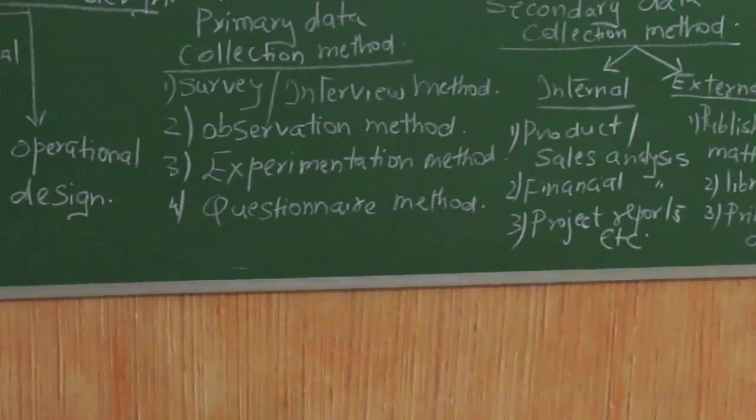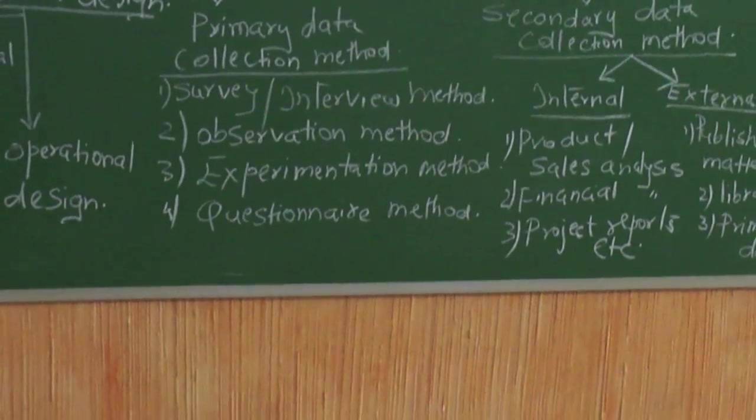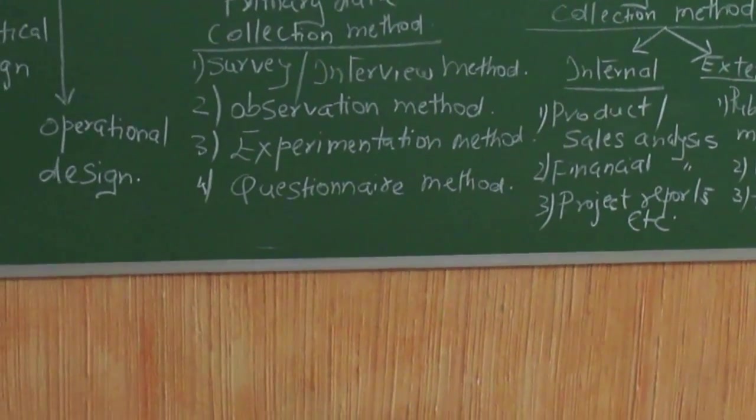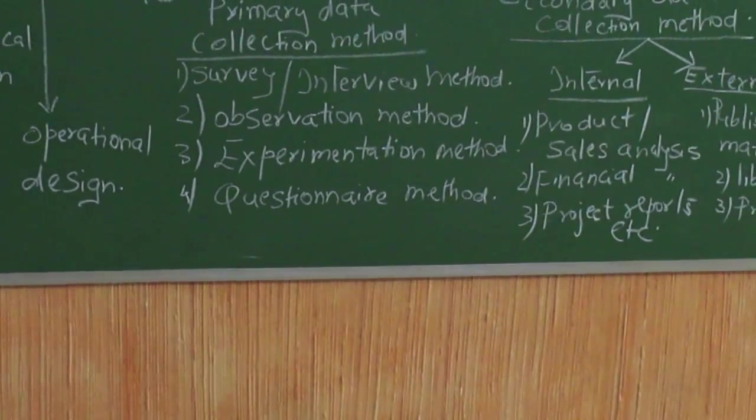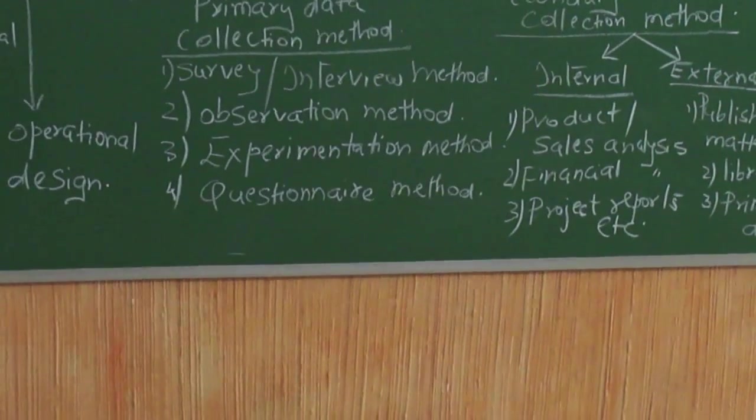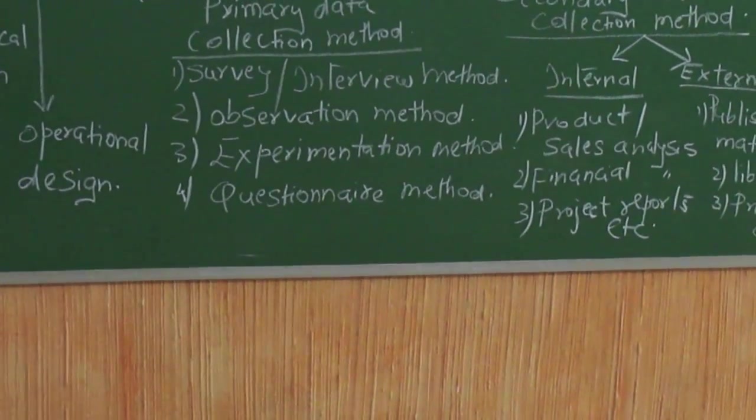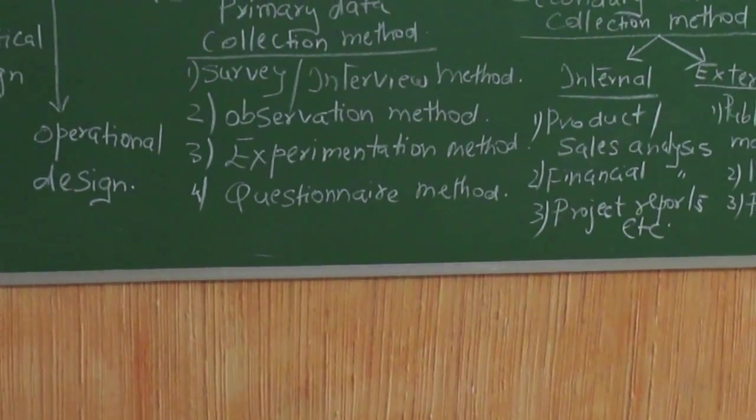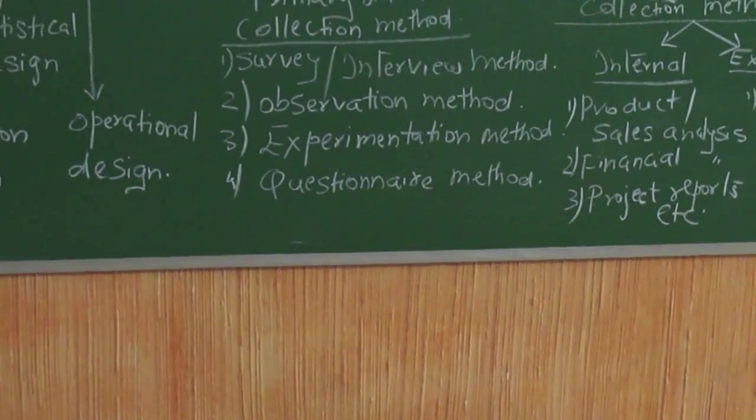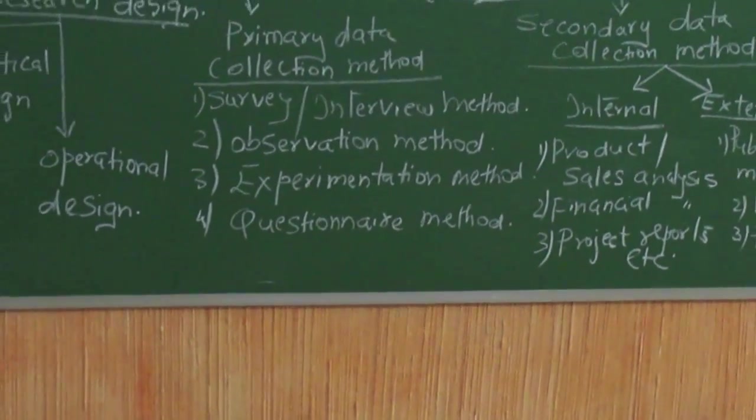Primary method: you have the survey or interview which can be structured, non-structured, open ended, close ended. It can be very formal or very informal. Then it can be observation method also, where you go and observe - for example in a mall you want to find out which shop people go to more. There will be an observer standing and seeing how many people are going to each of these places. That is observation method, which can be subjective depending upon the researcher.